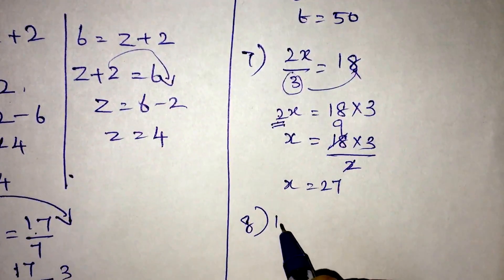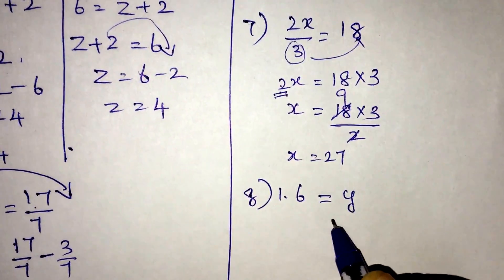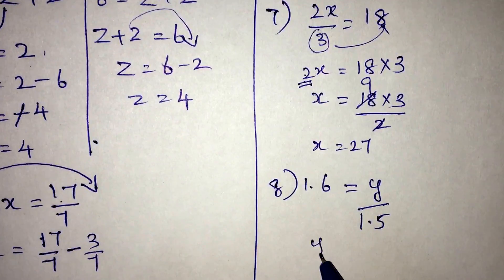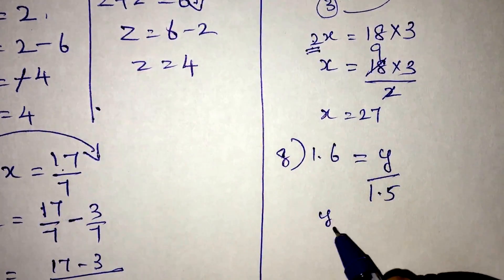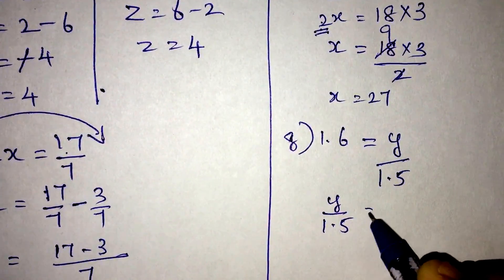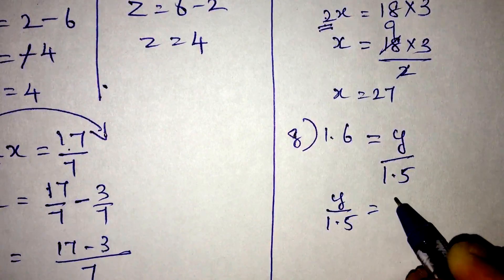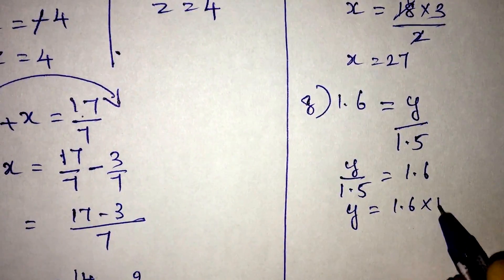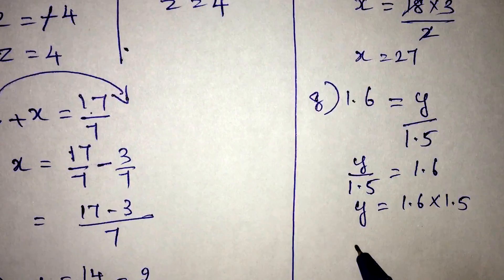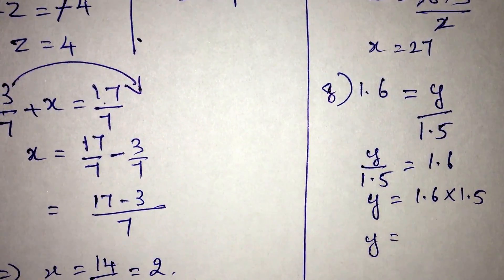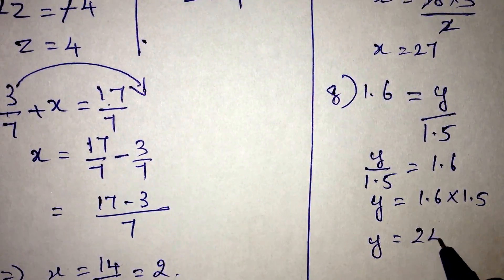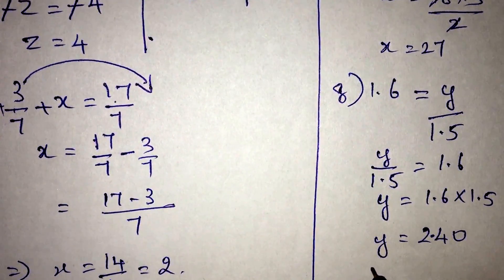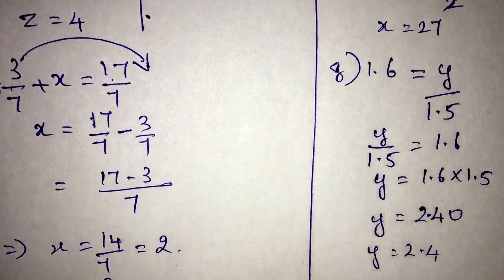Question number 8: 1.6 is equal to y by 1.5. Bringing y to the left side, y by 1.5 equals 1.6. The value of y will be 1.6 into 1.5, which equals 2.40. So y is 2.4.